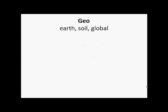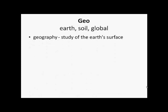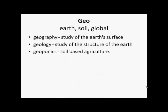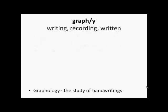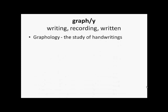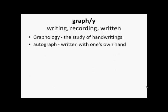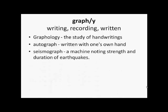'Geo' means the earth, soil or global. So geography is the study of the earth's surface. Geology is the study of the structure of the earth. Geoponics is soil-based agriculture. 'Graph' means writing, recording or written — so graphology is the study of the science of handwriting. Autograph means written with one's own hand. And seismograph is a machine which notes the strength and duration of earthquakes.